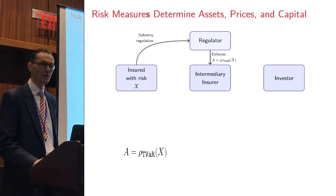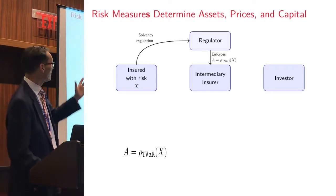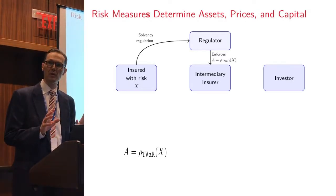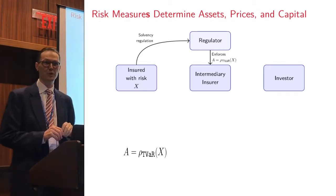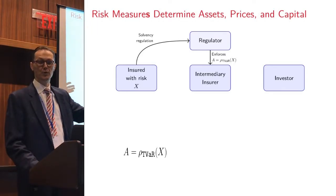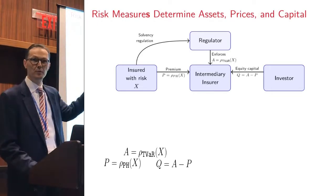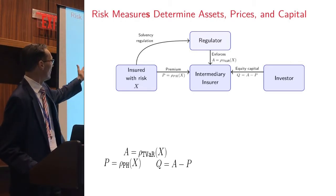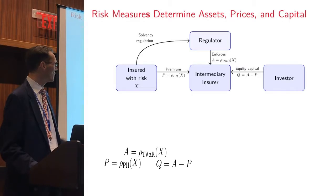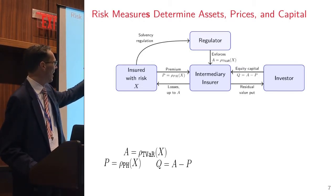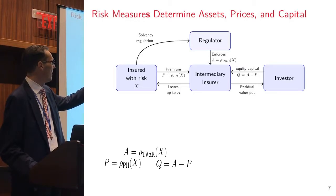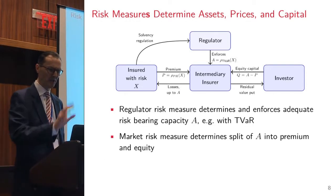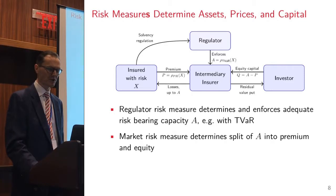The regulator has one set of concerns. They do not want the insurer to fail. They take a very conservative view of risk and typically use something like value at risk at a 99.9% level. That's one risk measure. The other risk measure is between the investor and the insured, intermediated by the insurance company. I now need to raise this amount of dollars to bear this risk. How am I going to split that between premium that the insured is going to pay and some amount of capital that the investor is going to contribute.